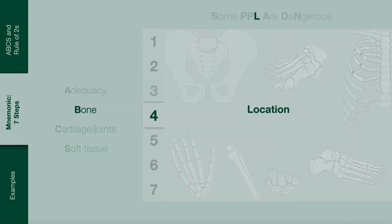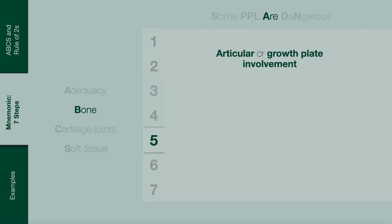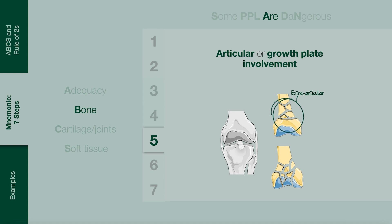Location. This step is simple — just identify and name the bone. Articular involvement. Determine whether the fracture extends to involve the joint. Fractures that involve the intra-articular surface typically require surgery. This is an extra-articular fracture which does not involve the joint. This is an intra-articular fracture which does involve the joint.